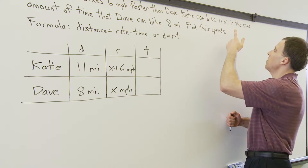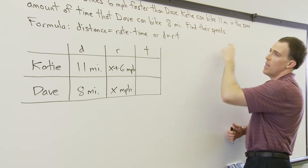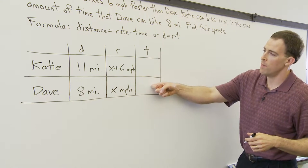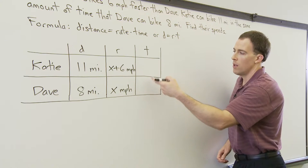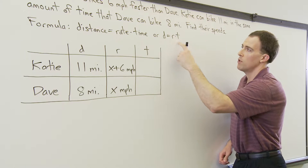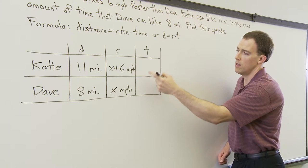And then we've got this part of the sentence here in the same amount of time. So their times must be the same. They must be equal to one another. We don't know of course how long that is, but we can use the formula distance equals rate times time to solve for time and then fill in the boxes for time.